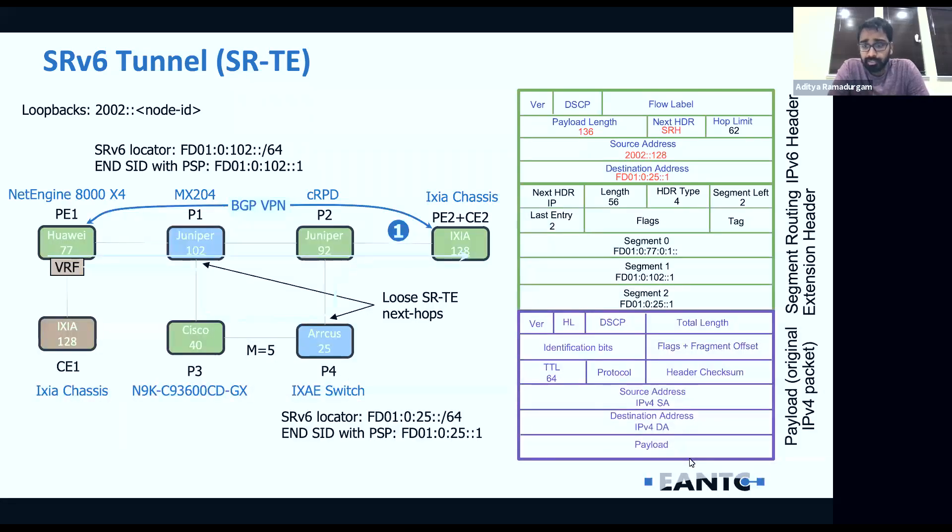As you can see on the right hand side, that's the exact packet that Ixia is going to craft. If we look a little bit deeper at the packet to see what's being pushed, the most purple header is the IPv4 header. That packet is pushed in an IPv6 header with SRH segment routing extension header. There are three different segments as you can see on the packet. The topmost segment, the active segment, is segment two, which is Arcus's end-SID. The next active segment is going to be Juniper's end-SID. And the next segment is going to be Huawei's end-DT4-SID.